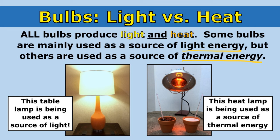Even though a table lamp's bulb is hot, I'm not using it to heat up the room — it's being used as a source of light. But on the right, you can see a heat lamp. Even though there is some light coming out of this bulb, I've got two pots of soil with thermometers, and I'm using this heat lamp to warm up those pots of soil — to produce heat. So this heat lamp is being used as a source of thermal energy. Just because you see a bulb does not mean the answer is light energy. Sometimes bulbs are used to produce thermal energy, so you have to pay attention to what the bulb is being used for.